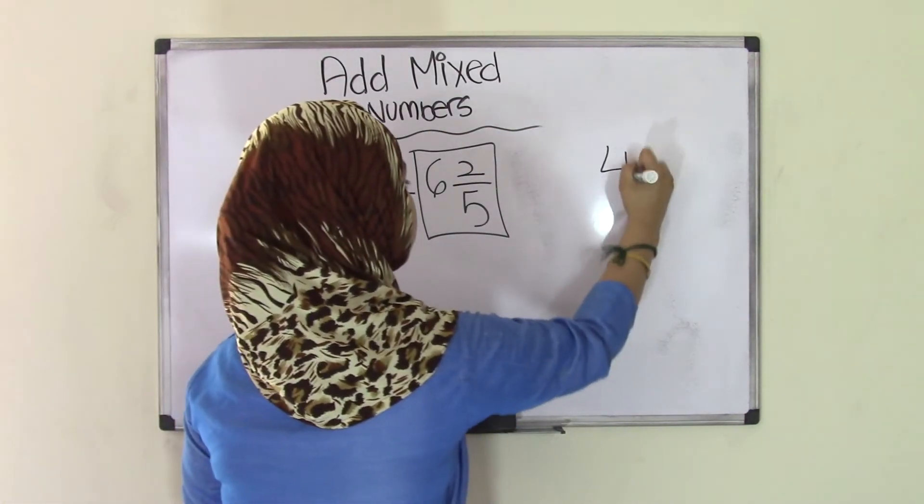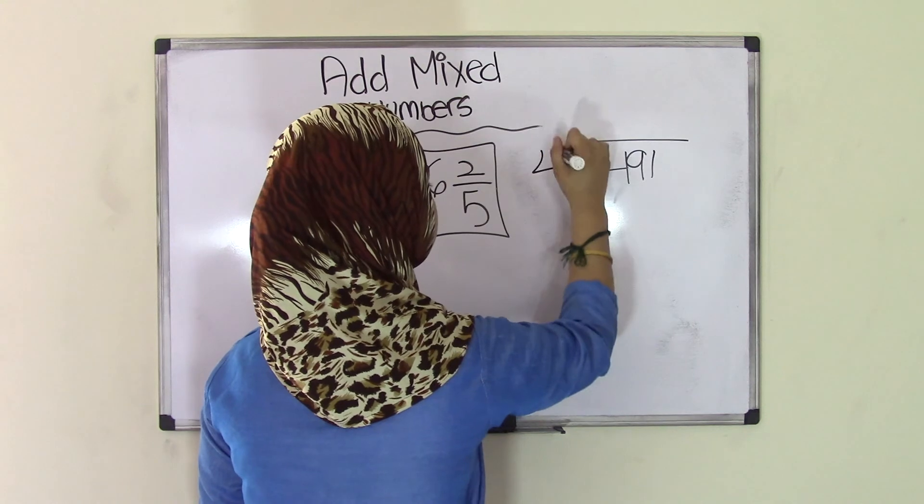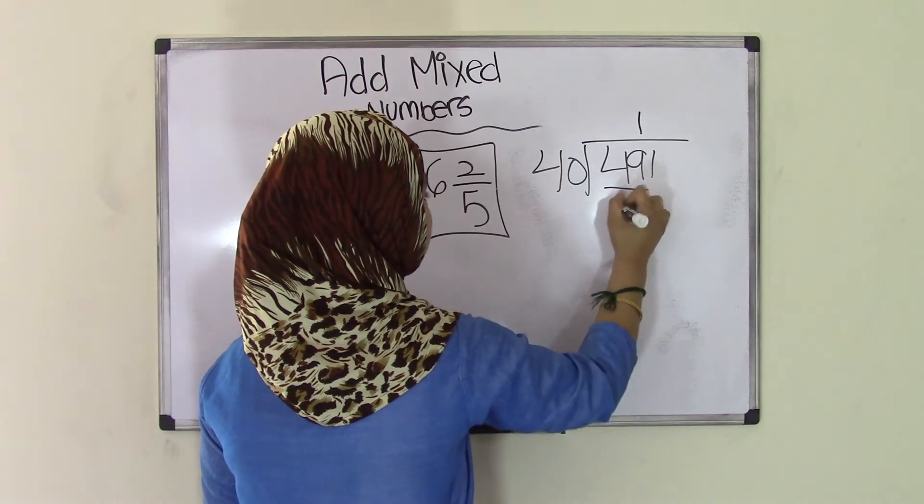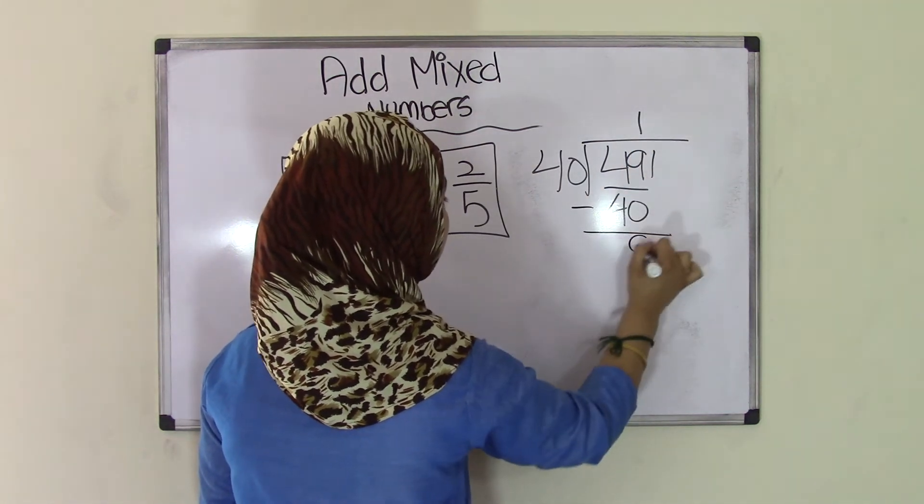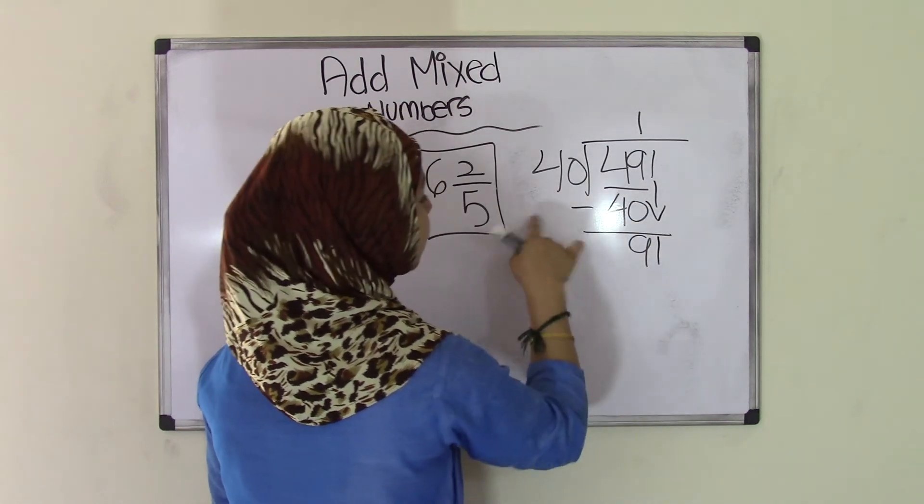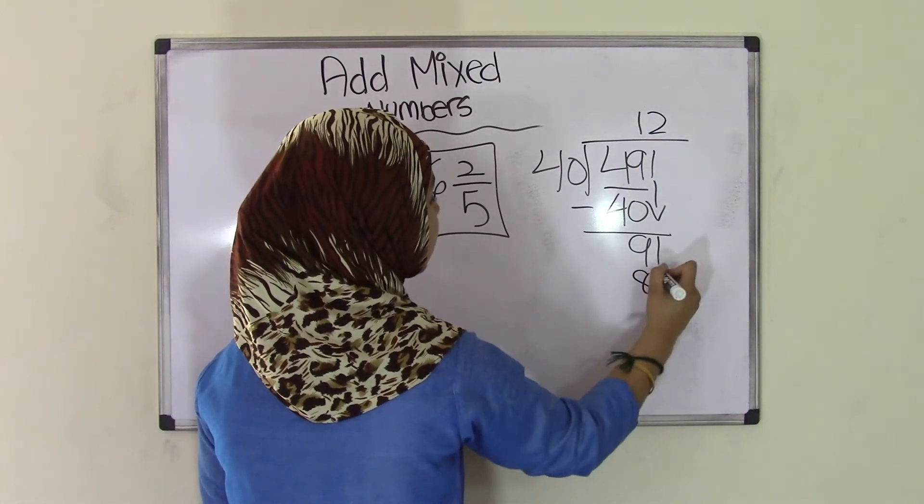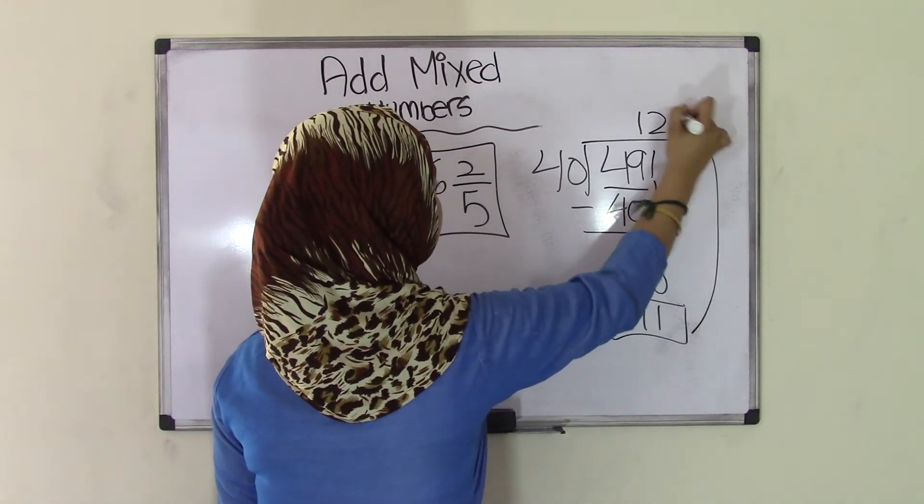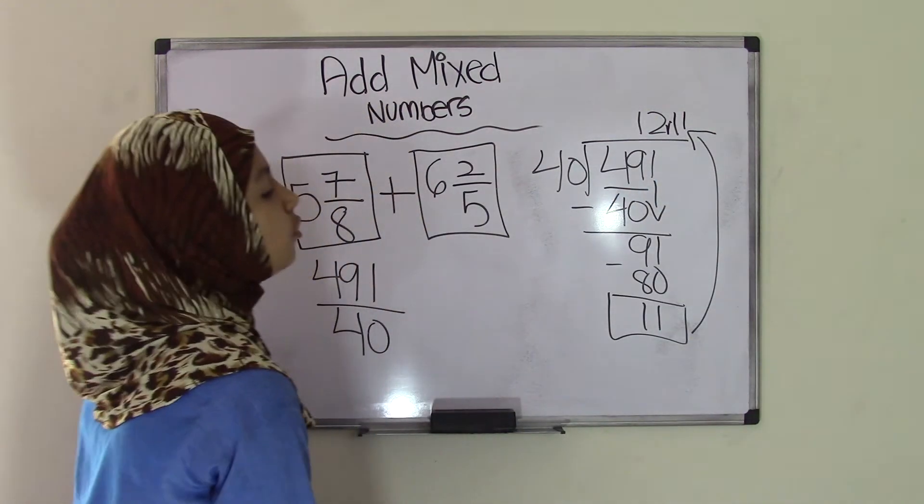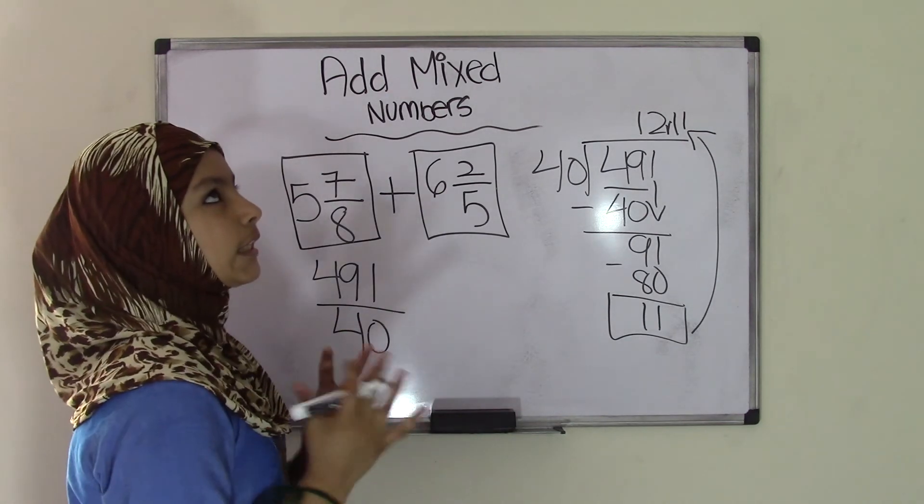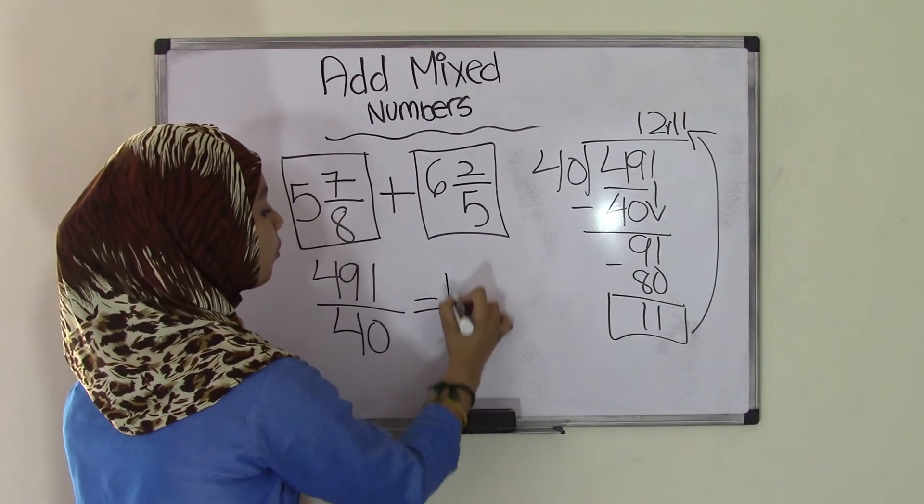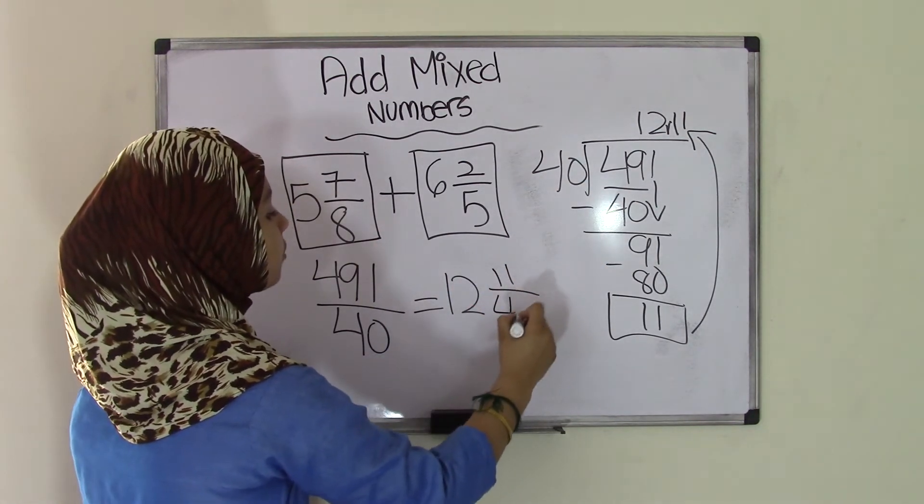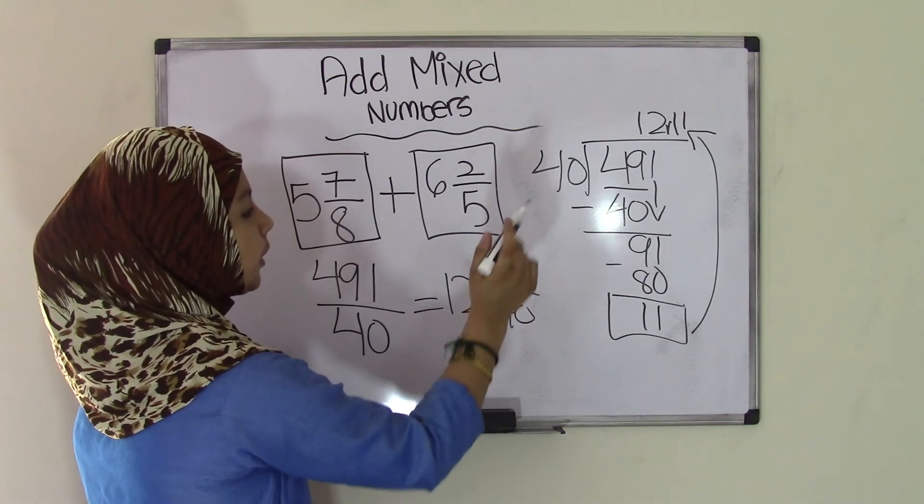We're going to have to do division now in order to change this improper fraction into a mixed number. So we have 491 divided by 40. 40 cannot go into 4, so we're going to combine 49. 40 can go into 49 once. Bring down the 9 and the 1. How many times is 40 going into 91? 40 times 2 equals 80. Subtract, you get 11 as your remainder. You bring up the 11 as the remainder. Now you got your answer, but what do you do next? Well, this is the easiest way: quotient becomes whole number, remainder becomes numerator, and divisor becomes denominator.